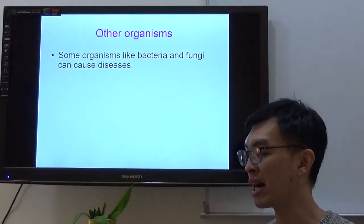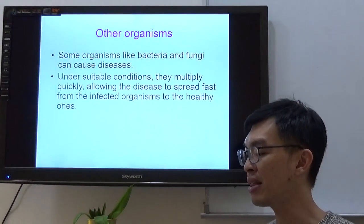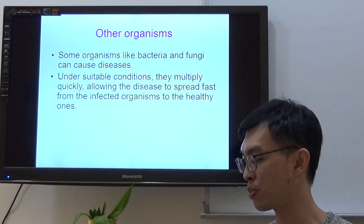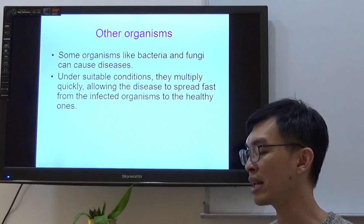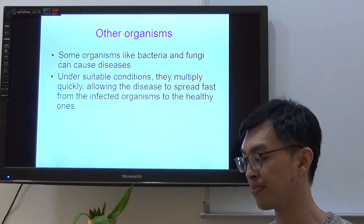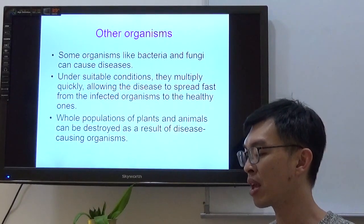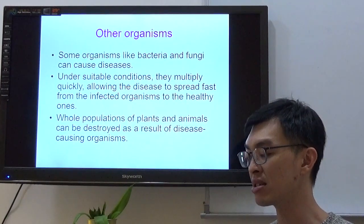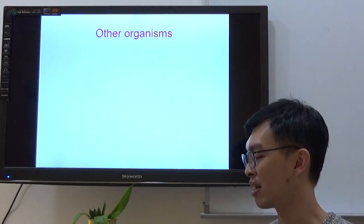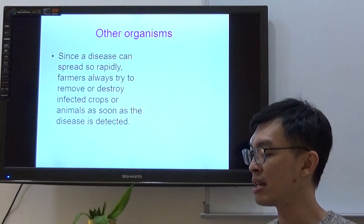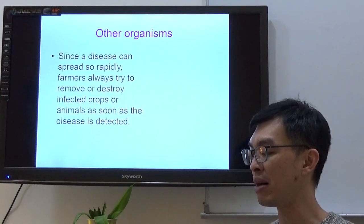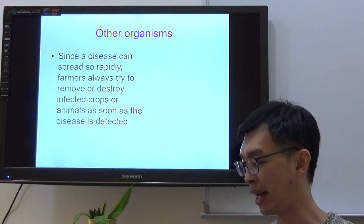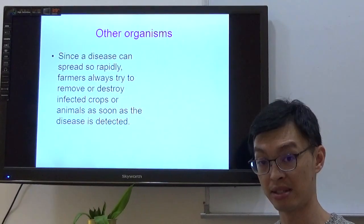Some organisms like bacteria and fungi can cause diseases. Under suitable conditions, they multiply quickly, allowing the disease to spread fast from infected organisms to healthy ones. Whole populations of plants and animals can be destroyed as a result of disease-causing organisms. Farmers always try to remove or destroy infected crops or animals as soon as the disease is detected.